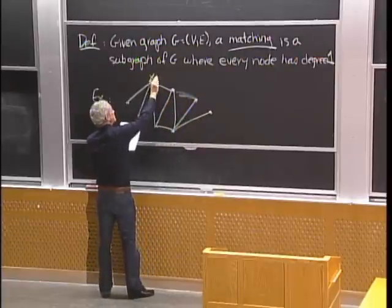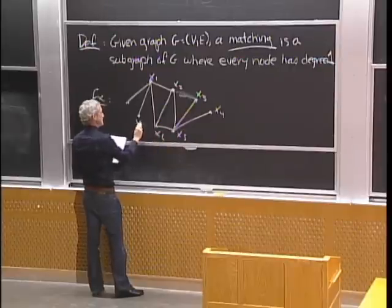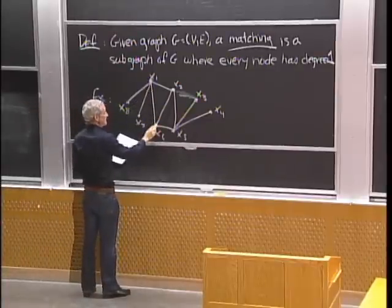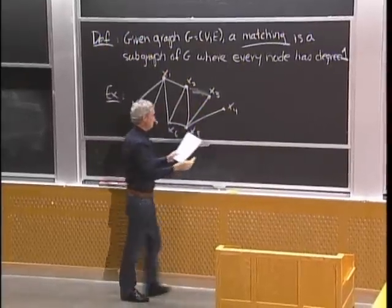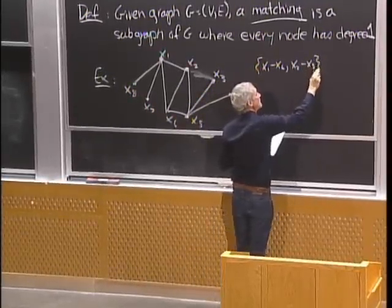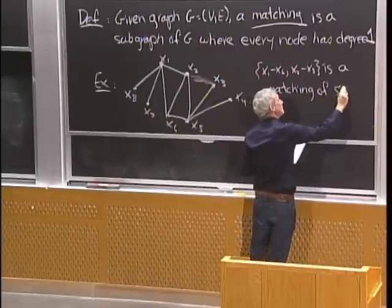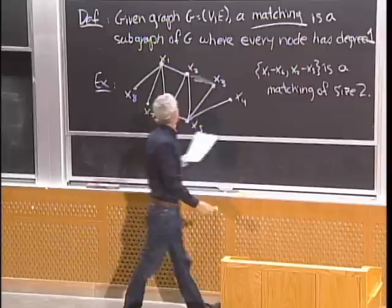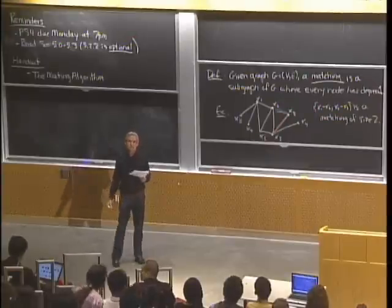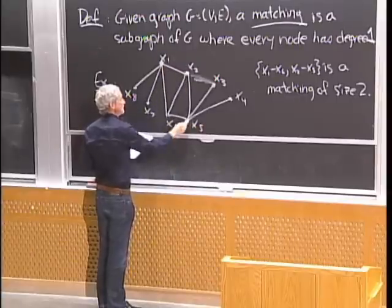Let's label these nodes x1, x2, x3, x4, x5, x6, x7, and x8. Now x1-x6 and x2-x5 is a matching with two edges, so we say it has size 2. I can pair these guys up and pair these guys up. Is there any bigger matching in this graph? I found one with two marriages — two edges.